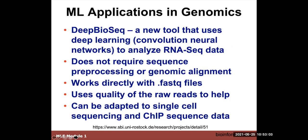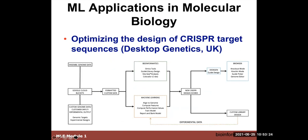DeepBioSeq uses convolutional neural nets to analyze RNA-Seq data without requiring sequence preprocessing or genomic alignment — it can work directly with FASTQ files and has been adapted to single-cell sequencing and ChIP sequencing. Machine learning is also used in CRISPR target design — Desktop Genetics used machine learning from large collections of experimental data on what works and doesn't work with CRISPR, enabling the design of better and more useful CRISPR target sequences for gene modification.